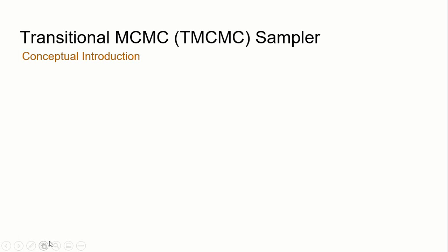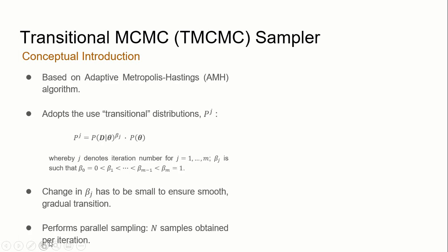Now for the Transitional Markov Chain Monte Carlo (TMCMC) sampler. It is based on the adaptive Metropolis-Hastings algorithm (AMH). Instead of sampling directly from the posterior, it uses intermediate transitional distributions defined as the likelihood raised to the power of a tempering parameter beta_j, multiplied by the prior. Here j denotes the transition step from 1 to m. Beta_j increases from 0 to 1 at every iteration.